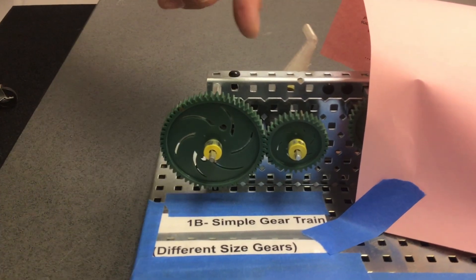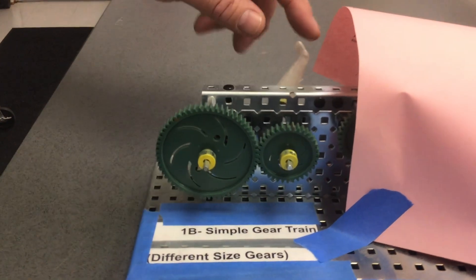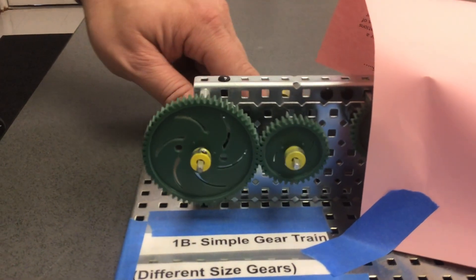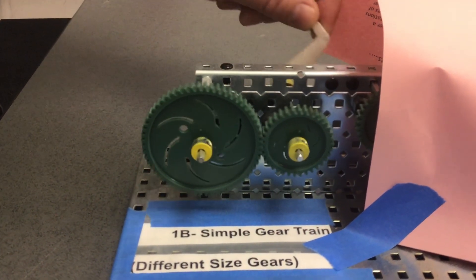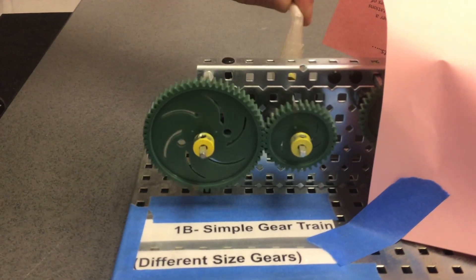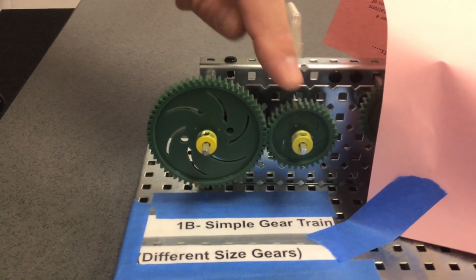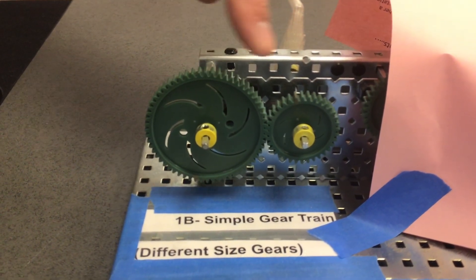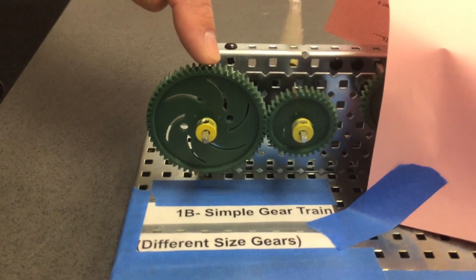On this gear, we have a mark on it. If we turn this gear, the gear ratio will be five to three - five turns here to three turns here.